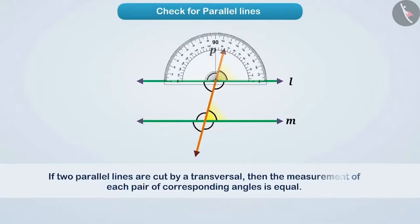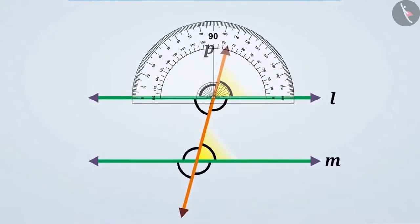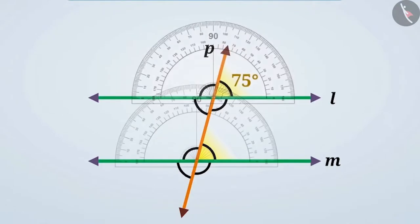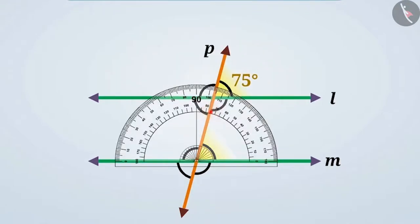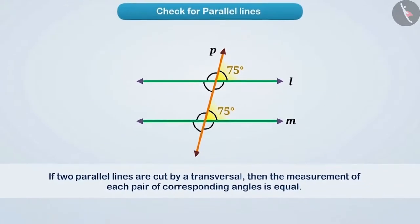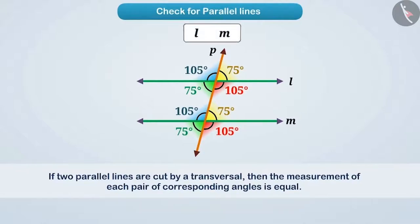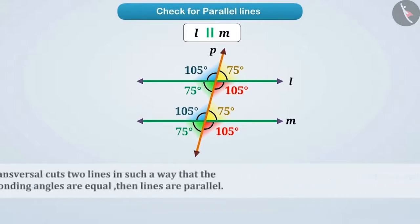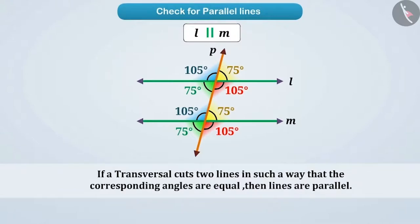Similarly, with the help of the protractor, let us find out whether this pair of corresponding angles are equal or not. We see that the measurements of these two angles are the same — that is, they are equal. Since all pairs of corresponding angles are equal, the lines L and M are parallel. If a transversal cuts two lines such that the corresponding angles are equal, then the lines are parallel.